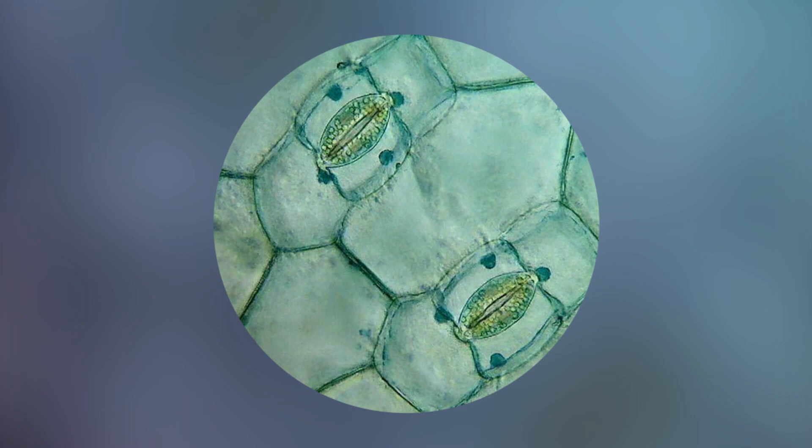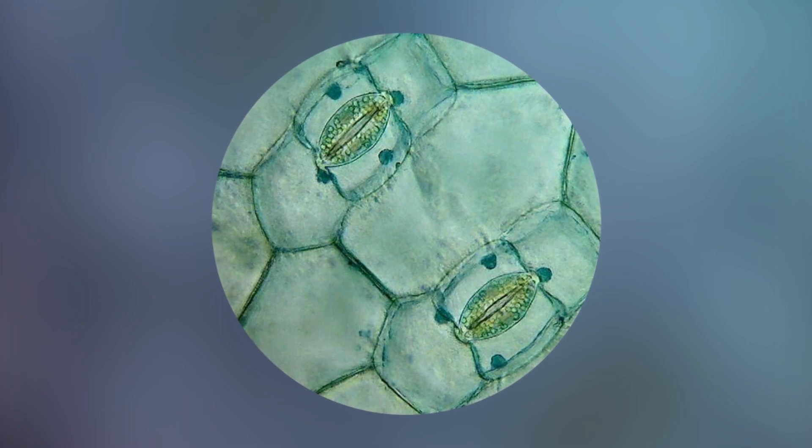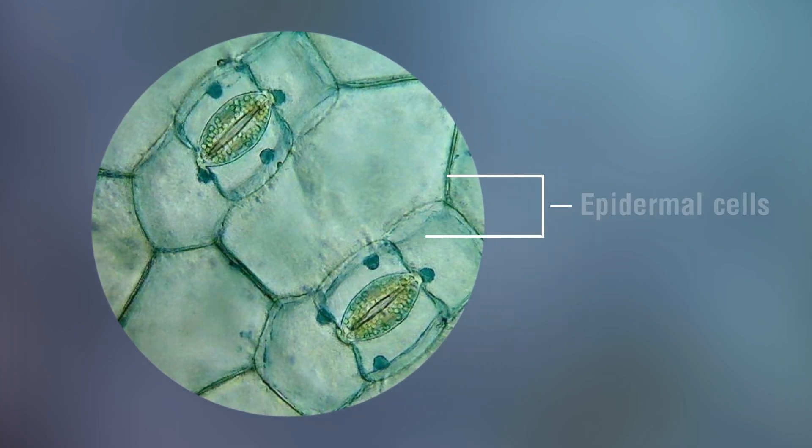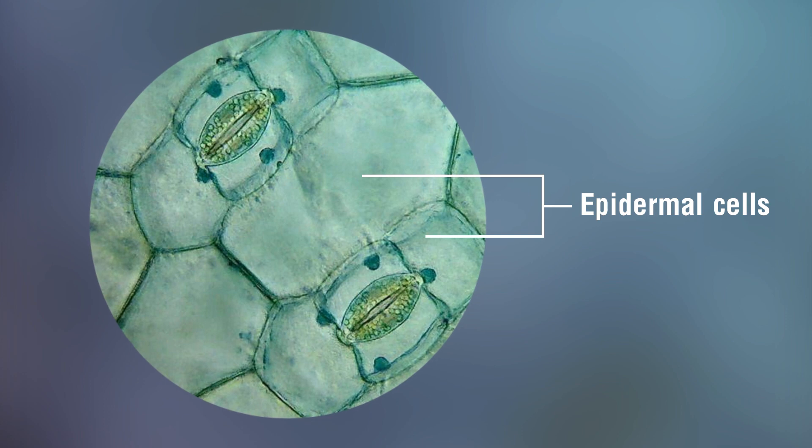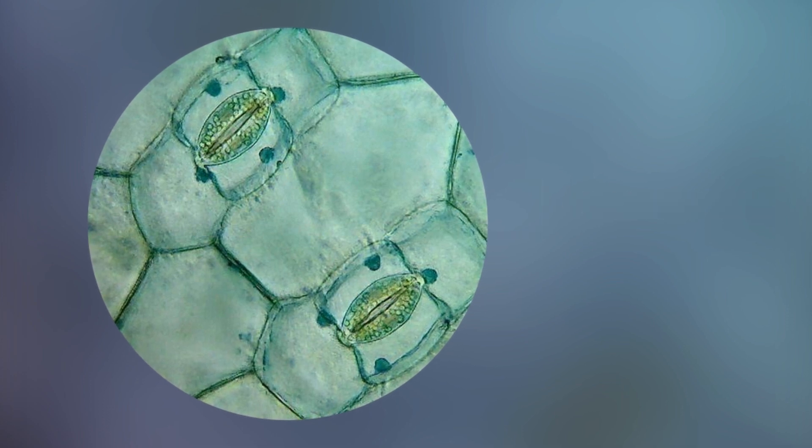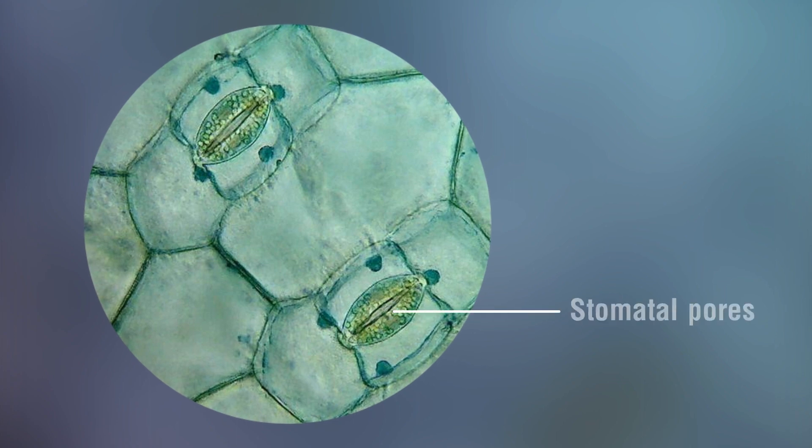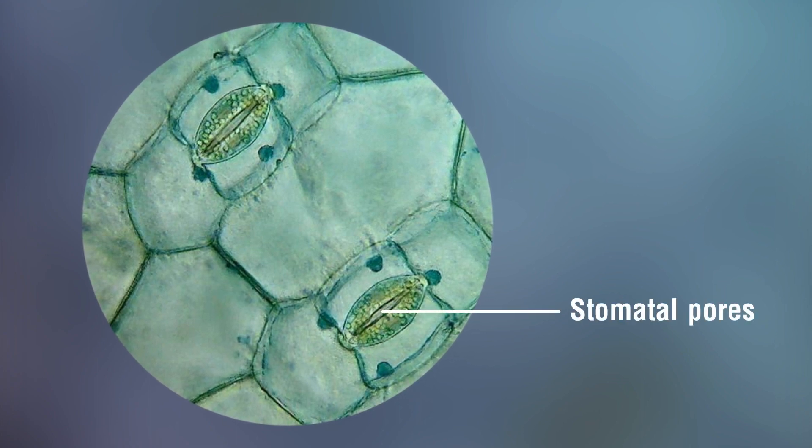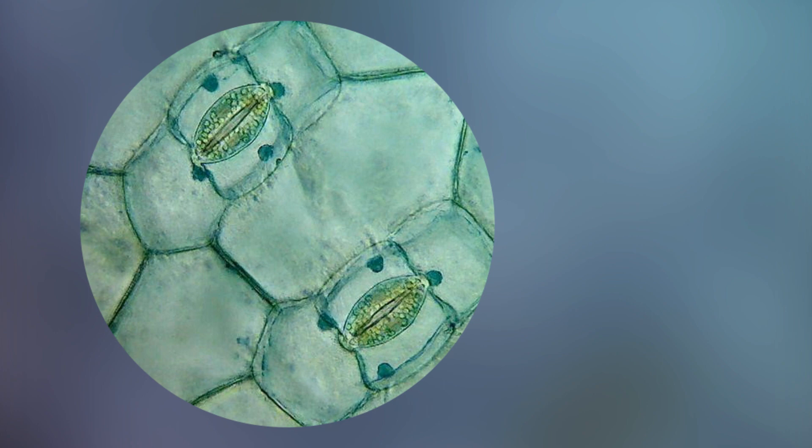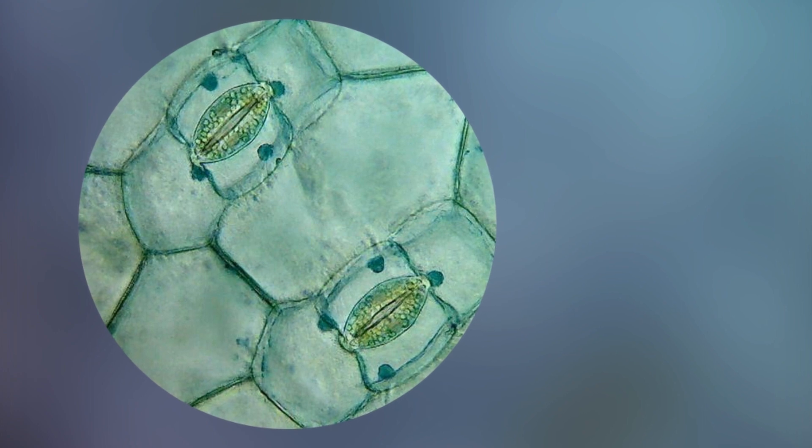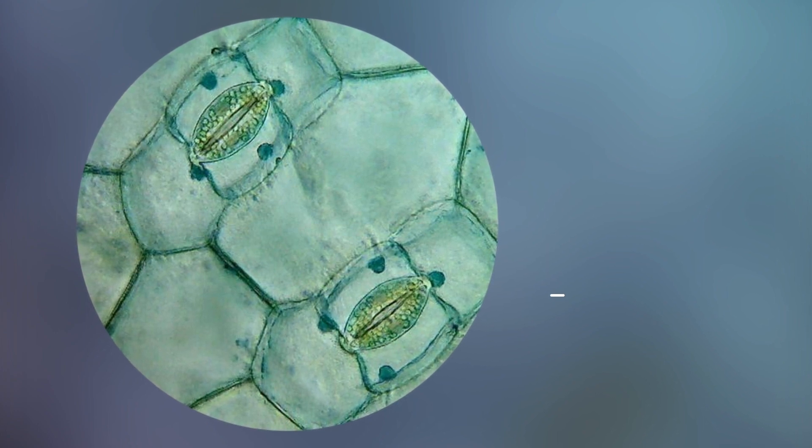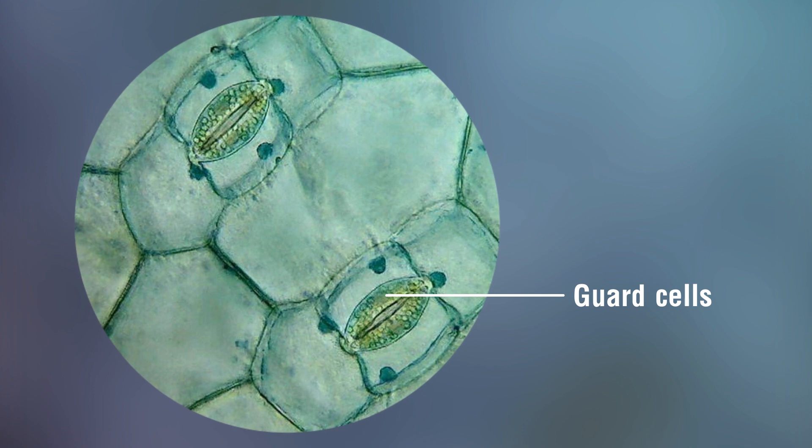Observation: The leaf peel comprises a number of compactly arranged cells called epidermal cells. In between these cells there are a number of tiny pores called stomatal pores. Each pore is surrounded by two specialized bean-shaped cells known as guard cells.